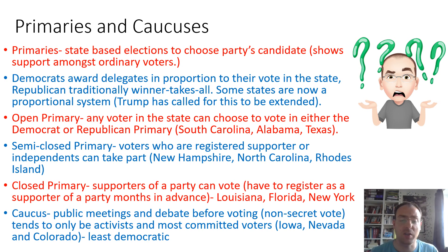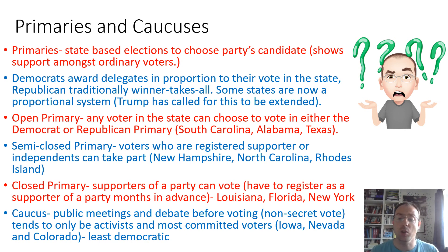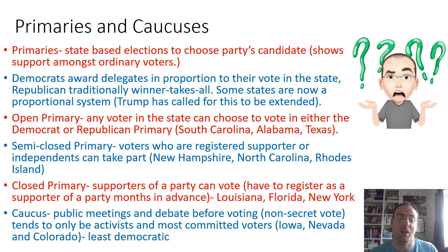The other method is caucuses. These happen as a series of public meetings where there's a debate and then a vote. The vote is non-secret — it tends to be through raising hands or standing in a particular part of the hall to show which side you support. It tends to be more popular with activists and the most committed voters, and some can be a little more extreme than the norm. It tends to be used in more lowly populated states: Iowa, Nevada, and Colorado. It's definitely seen as being far less democratic than the primary, and one of the calls for making the system more democratic is to remove caucuses and move to primaries being used in all states.